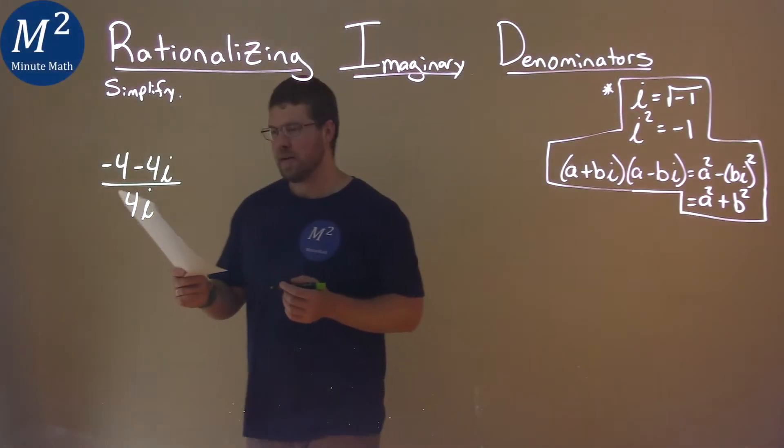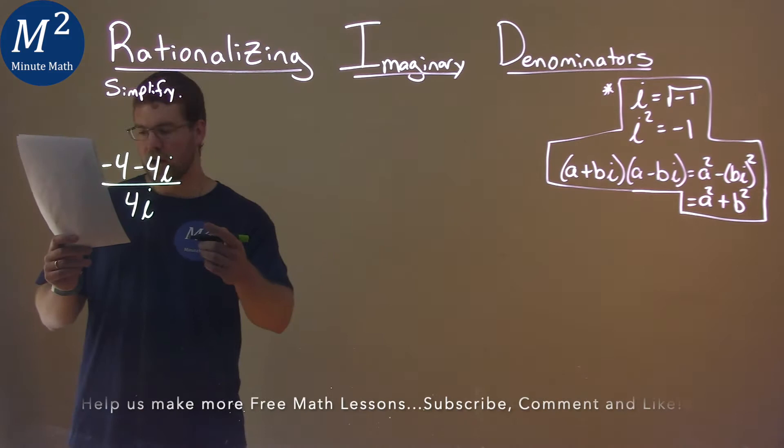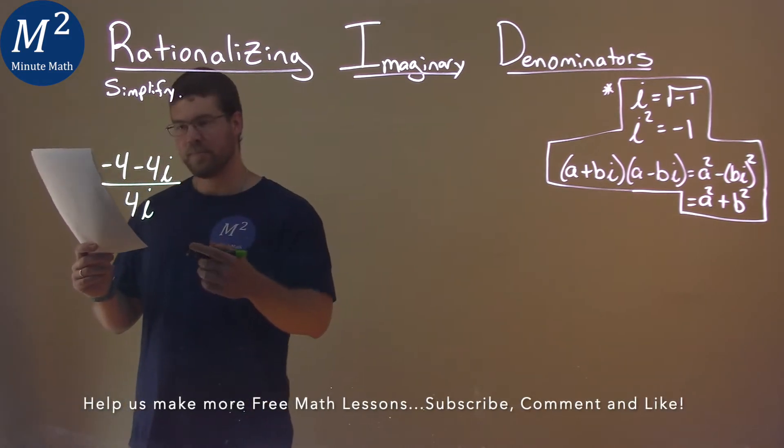We're given this problem right here. Negative 4 minus 4i divided by 4i, and we've got to simplify.